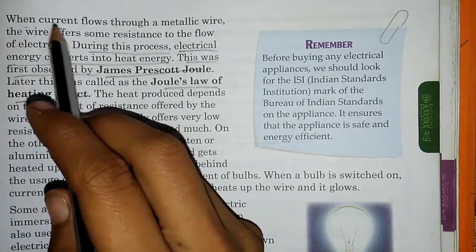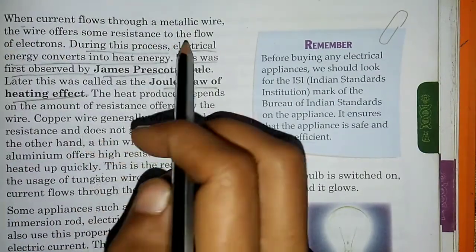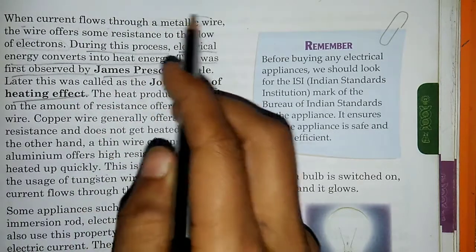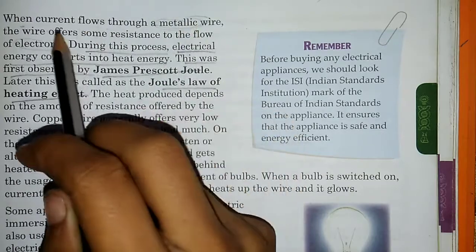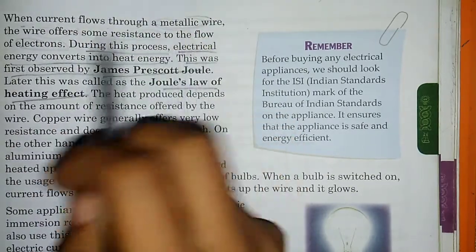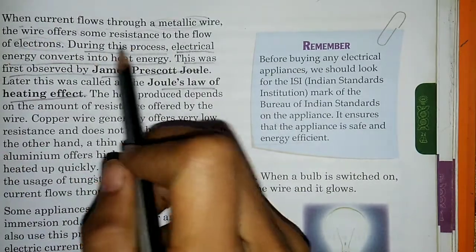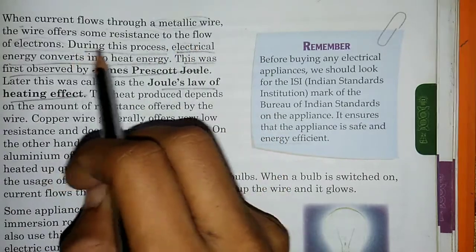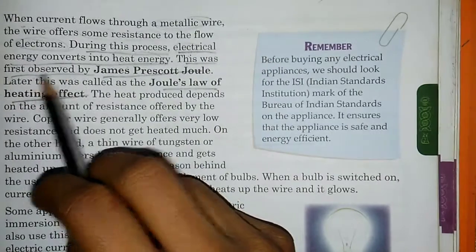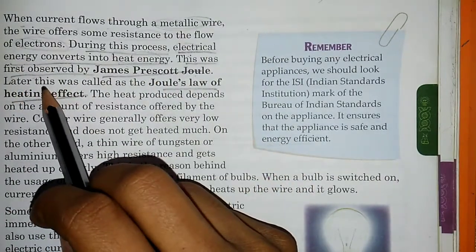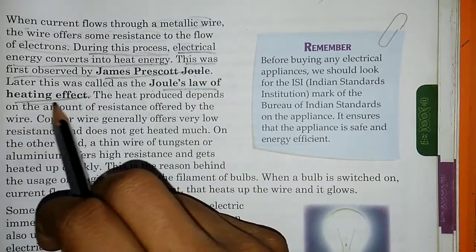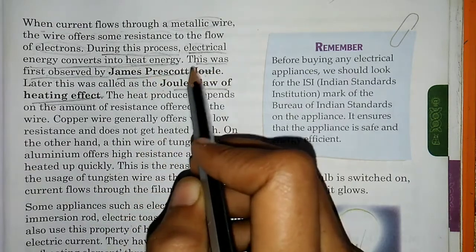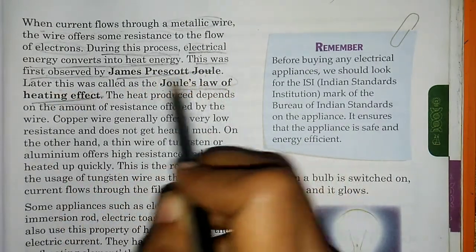When current flows through a metallic wire, the wire offers some resistance to the flow of electrons. During this process, electric energy converts into heat energy. This was first observed by James Prescott Joule, and later this was called Joule's law of heating effect.